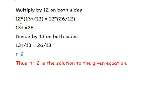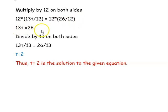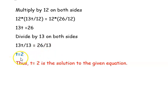Next, we multiply both sides by 12: 12 times 13t over 12 equals 12 times 26 over 12, giving 13t equals 26. Now we divide both sides by 13: 13t over 13 equals 26 over 13, so we get t equals 2. Therefore t equal to 2 is the solution to the given equation.